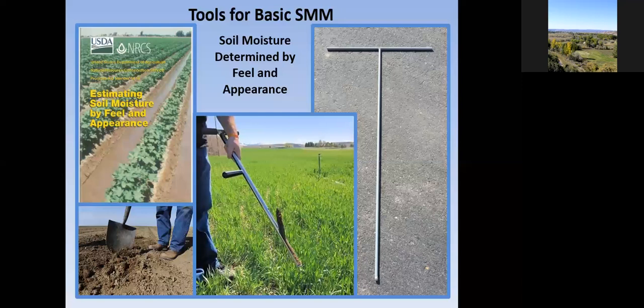Some people attach a piece of drill stem to the ball probe tip, get down low, turn it to get a little piece of soil to texture, and use the 'Estimating Soil Moisture by Feel and Appearance' pamphlet to determine moisture at those depths. These are all your basic ways to get your soil moisture.